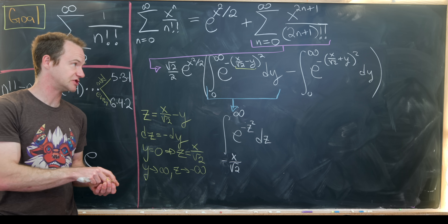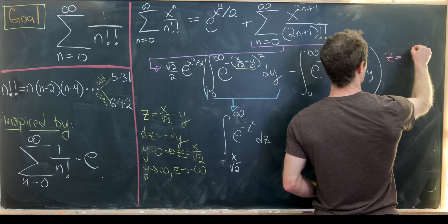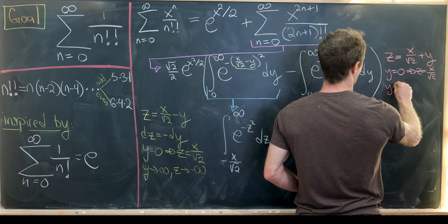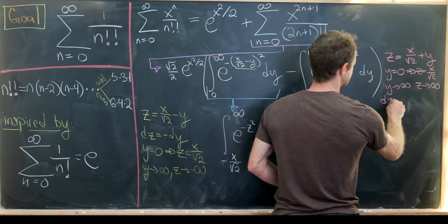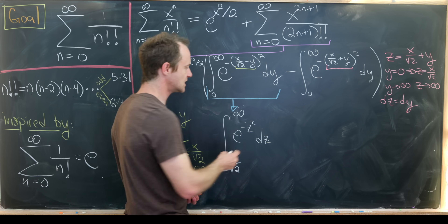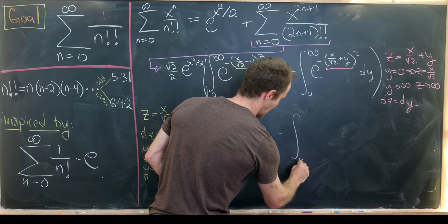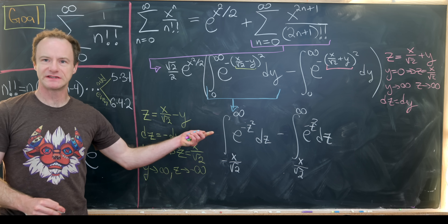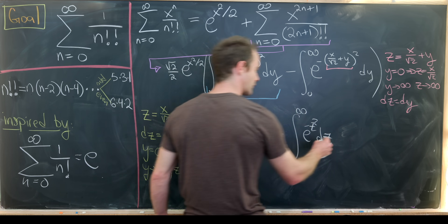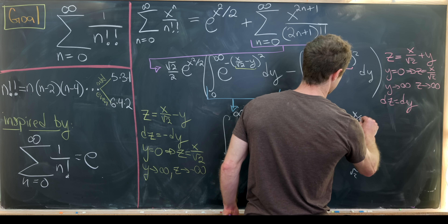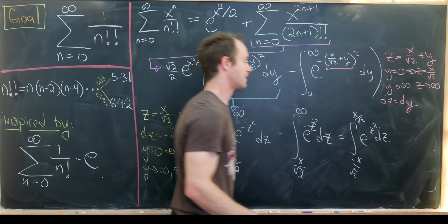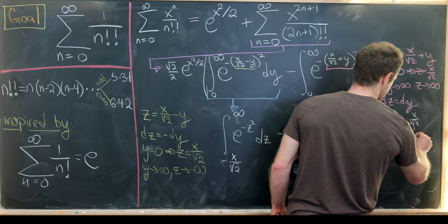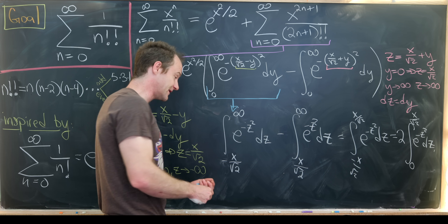For the second integral, we set z equal to x over root 2 plus y, so dz equals dy. When y equals 0, z equals x over root 2; as y goes to infinity, z goes to infinity. That gives the integral from x over root 2 to infinity of e to the minus z squared dz. Taking the difference of the two results and subtracting the overlapping region, we're left with the integral from minus x over root 2 to x over root 2 of e to the minus z squared dz. And because this is an even function, that's twice the integral from 0 to x over root 2 of e to the minus z squared dz.